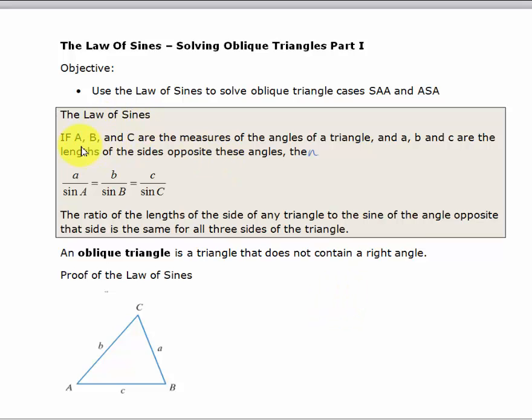Basically, the law of sines says that if A, B, and C are the measures of the angles of a triangle, and a, b, and c are the lengths of the sides opposite these angles, then a over sin A equals b over sin B equals c over sin C.